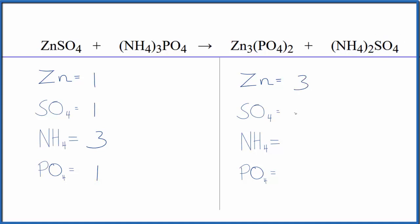For the products we have three zincs, one sulfate, two of the ammonium ions, and then two of the phosphate ions. So you can see how quickly you can count up all the atoms.